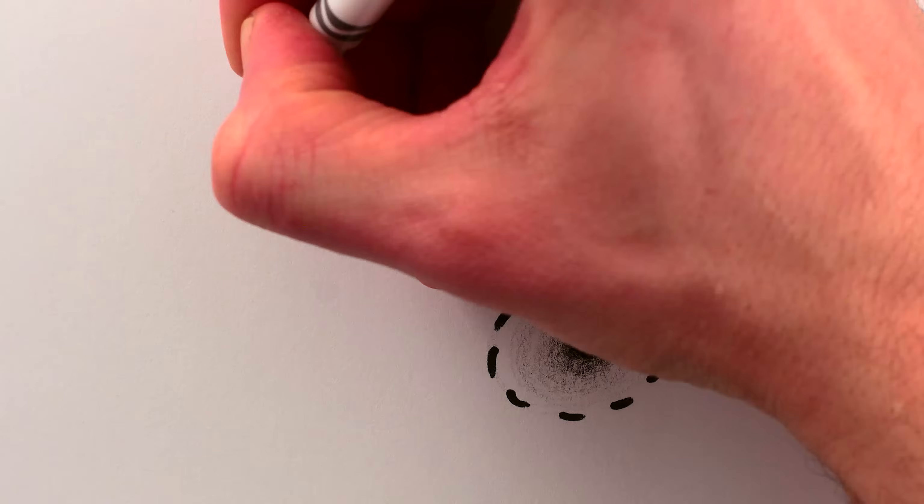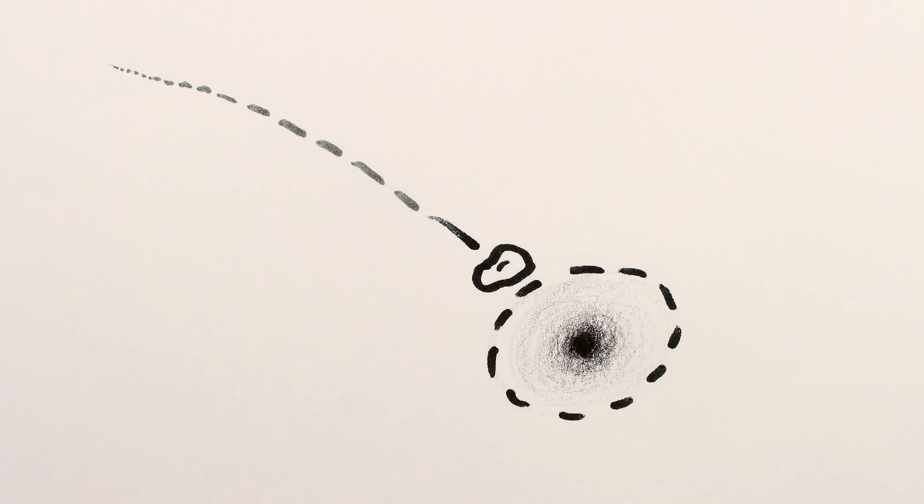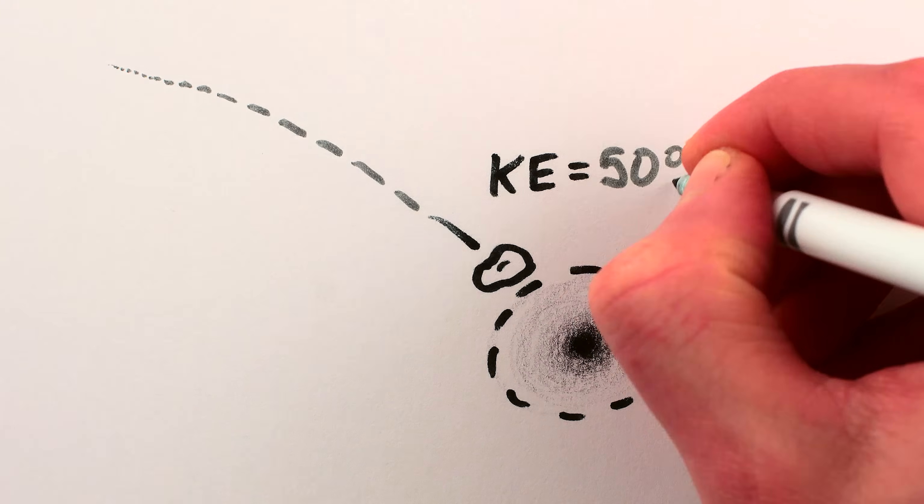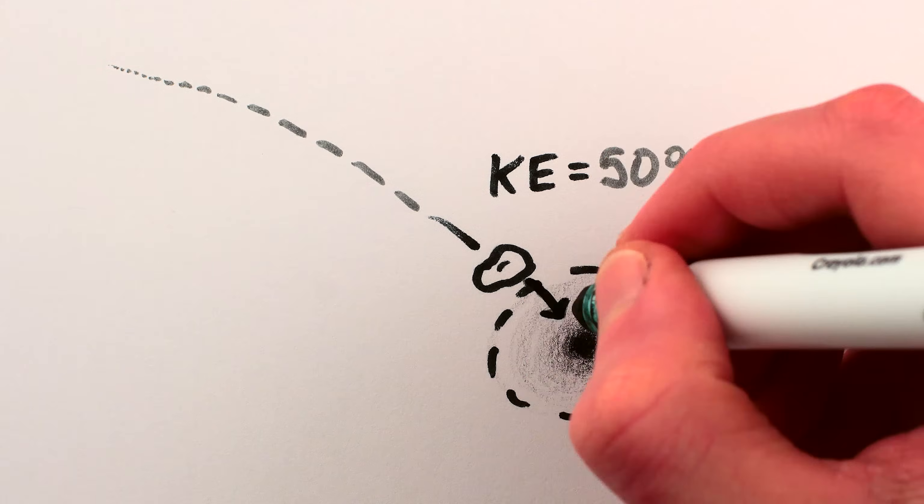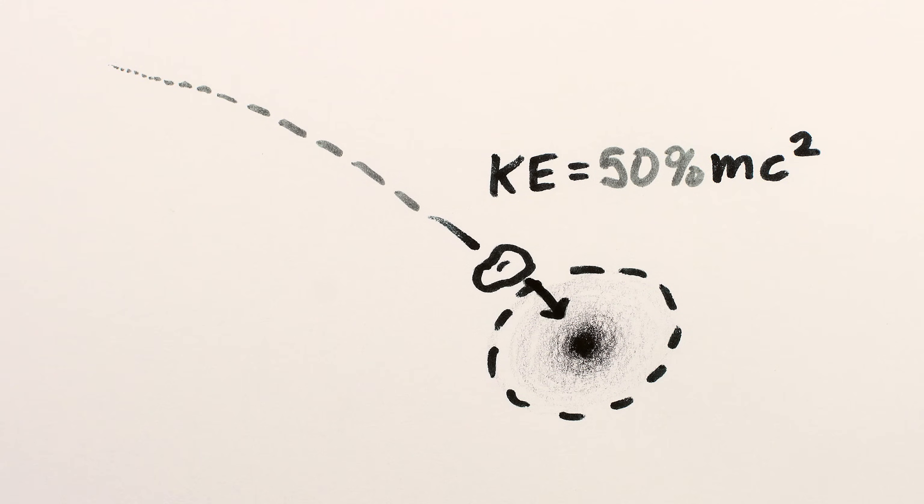Specifically, an object falling all the way to the event horizon of a black hole will have kinetic energy equivalent to roughly half of its mass energy. However, if the object continues to fall into the black hole, all of that energy will be stuck inside the black hole.